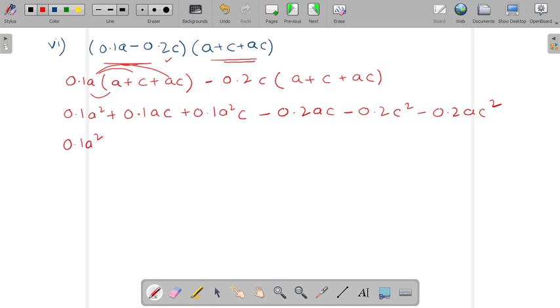So 0.1 a square as it is because this is unlike term. This is ac and this is also ac, so 0.1 minus 0.2 will be minus 0.1 ac. Now we see this, and all the remaining terms are unlike terms. This is a square c and this is ac square. So both terms are different, so we will write it as it is. I hope all these questions are clear to all of you. That is all for today. Thank you and have a nice day.